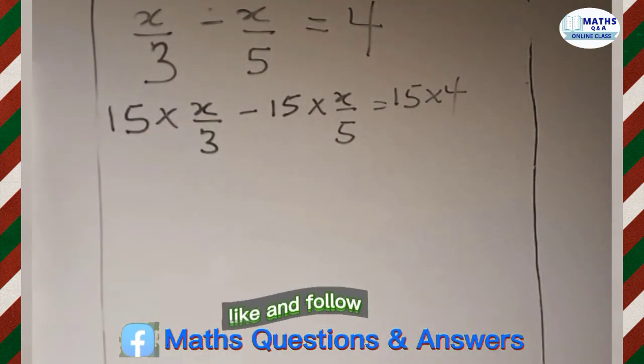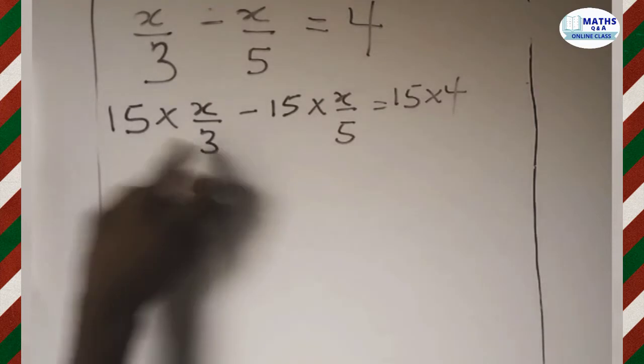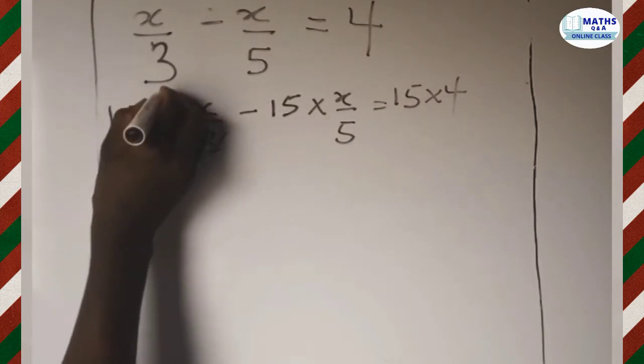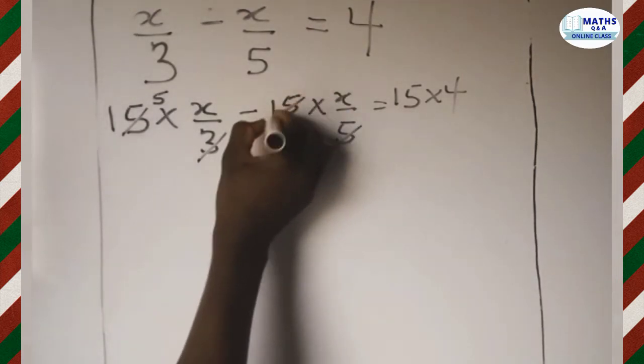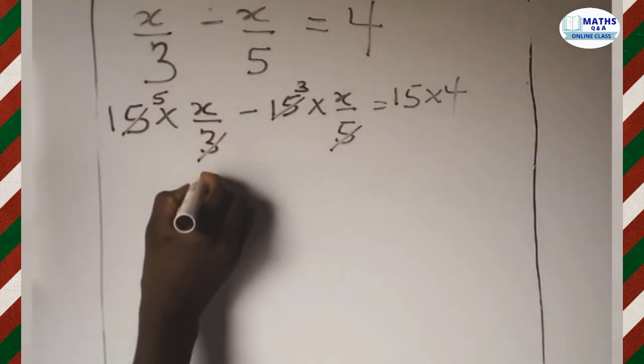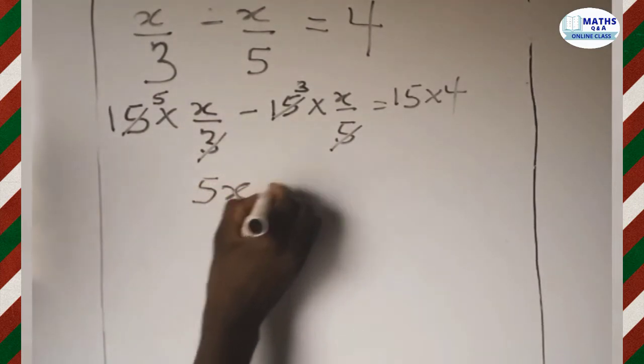Now 15 multiply x divided by 3 - you see that 15 divided by 3 will give us 5, so 3 divides 15 we have 5. 5 divides 15 we have 3. So 5x minus 3x.